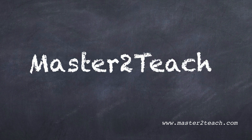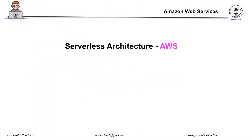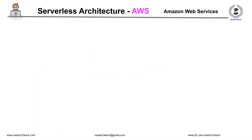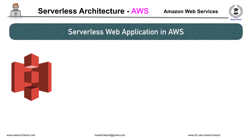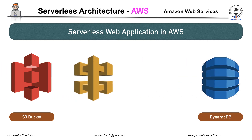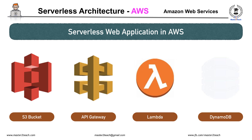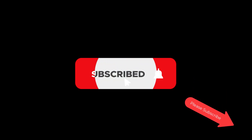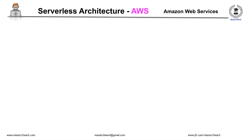Hello everyone, welcome to Master2Teach step-by-step guide. In this video you will learn serverless web applications in AWS. We will use S3, DynamoDB, API Gateway, and AWS Lambda to make our site serverless. I will try my best to explain step-by-step. If you haven't subscribed to our channel, please click the subscribe button.